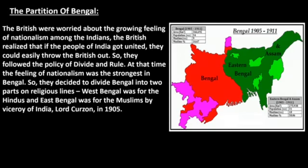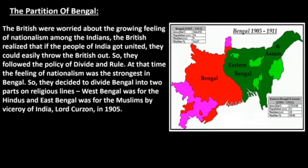The British were worried about the growing feeling of nationalism among the Indians. The British realized that if the people of India got united, they could easily throw the British out. So they followed the policy of divide and rule. At that time, the feeling of nationalism was the strongest in Bengal.